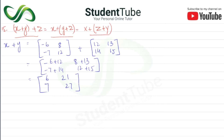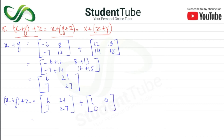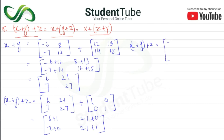Now we compute (X plus Y) plus Z. X plus Y is [6, 21; 7, 27] and Z is [1, 0; 0, 1]. Adding: 6 plus 1 equals 7, 7 plus 0 equals 7, 21 plus 0 equals 21, 27 plus 1 equals 28. So (X plus Y) plus Z equals [7, 21; 7, 28].